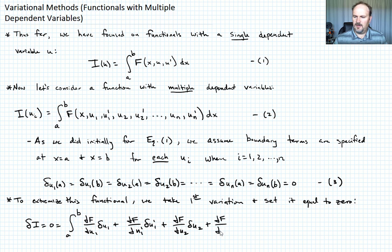plus partial of f with respect to u2 prime times delta u2 prime plus dot dot dot partial of f with respect to un prime times delta un prime, right? That whole thing integrated over dx, right? Call this equation four.